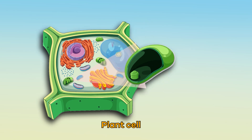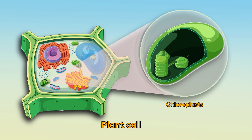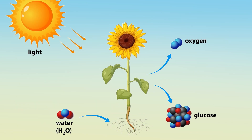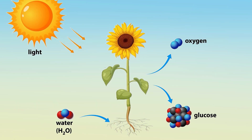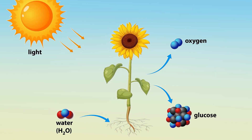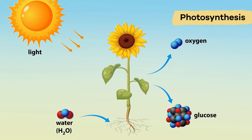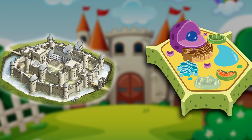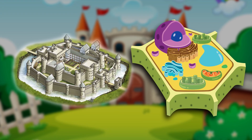Plants also have chloroplasts, which convert water and sunlight into energy through photosynthesis. They are the castle garden.